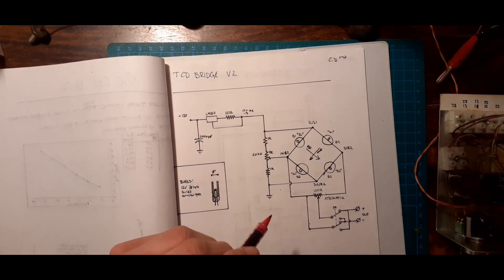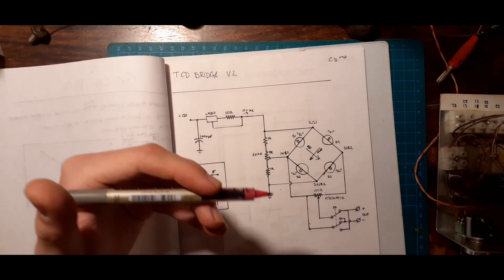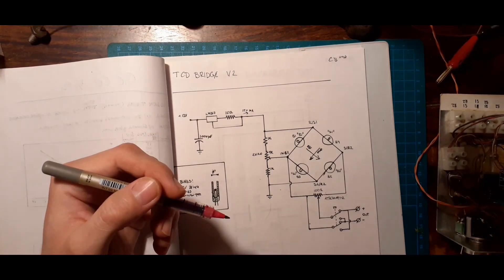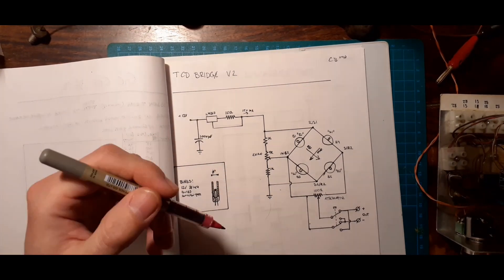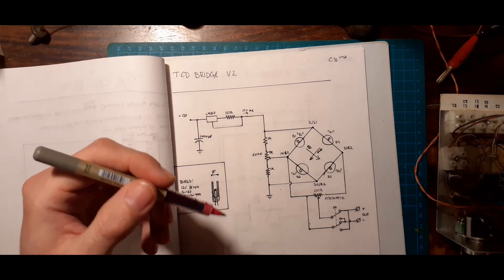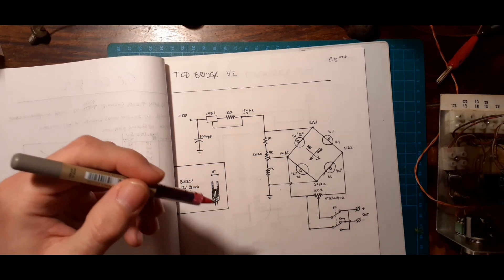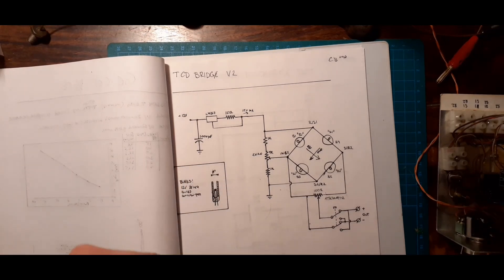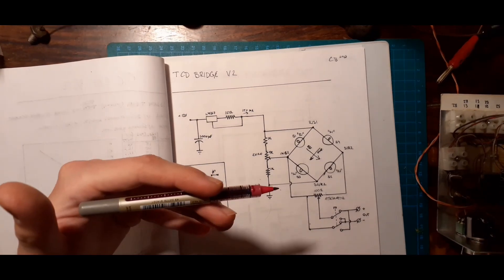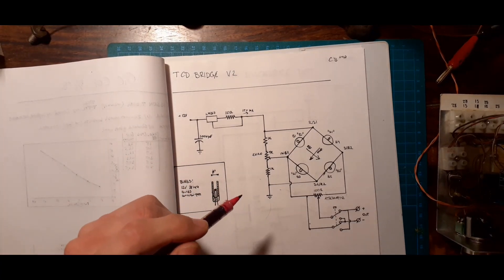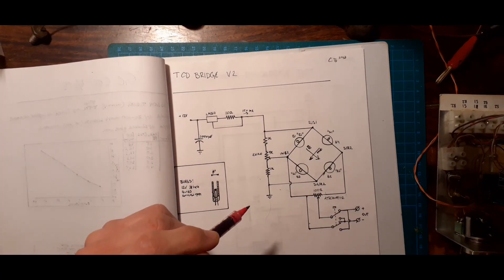So basically, you'll have some kind of heated filament, and you'll have your carrier gas passed over it, and it'll reach some kind of equilibrium. Then when some sample flows over it, the thermal conductivity of the gas will change, the amount of heat being wicked off of these elements will change, they'll increase or decrease in temperature, and the resistance of the filaments will change, and thus the current through them will change. And you can detect this as a voltage drop.